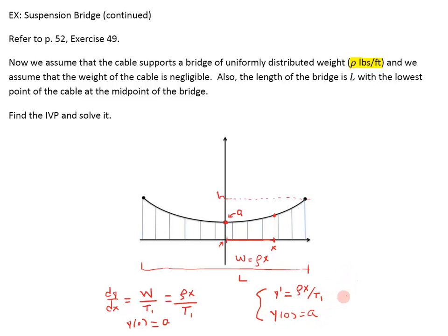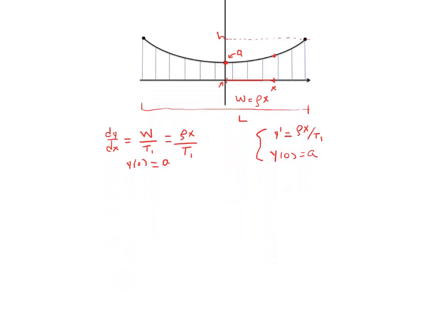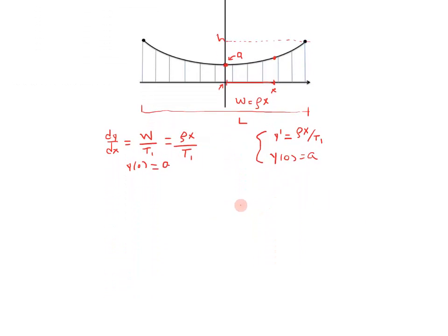Now, if you notice, that's a very simple equation to solve. Since t1 is a fixed constant and so is rho, this is separable. In fact, it's already separated for us. All we've got to do is integrate both sides to solve that. So, let's do that. I'm going to scroll down. Let's solve this differential equation right here. So, dy would be equal to rho x over t1 dx. Just by moving the dx over to the right-hand side, I integrate both sides. Left-hand side with respect to y is dy. Right-hand side is equal to rho x squared over 2t1 plus a constant.